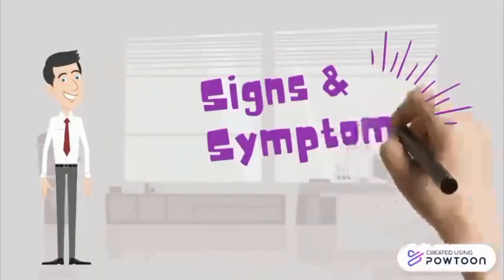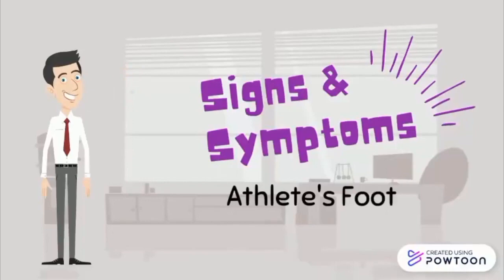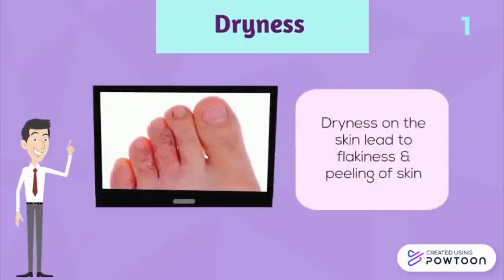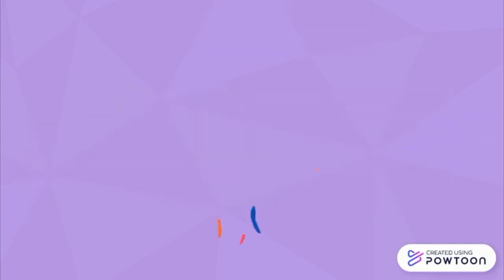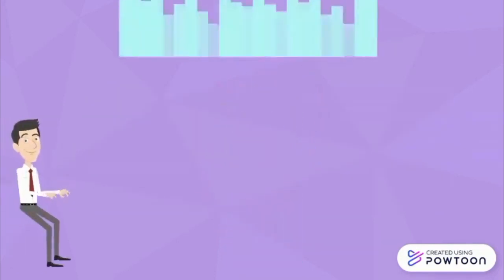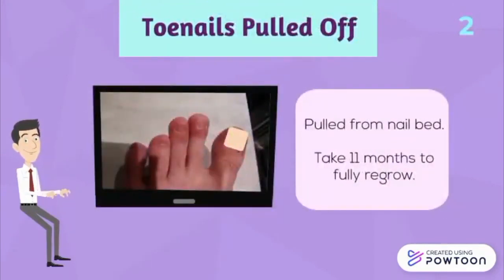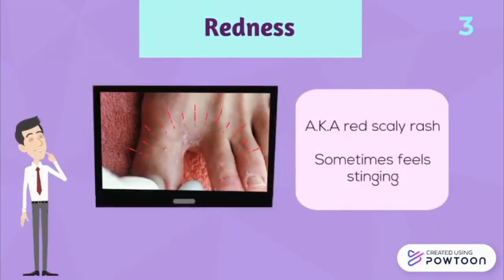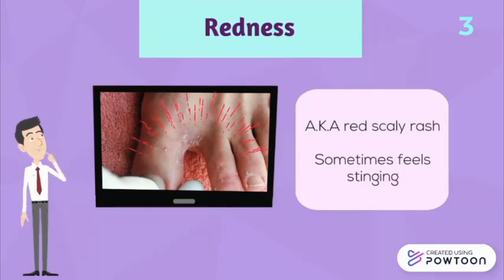Now we move on to the signs and symptoms of athlete's foot. The first is dryness around the toe area. This dryness can often lead to flakiness of the skin with peeling dried skin. The second is where the toenails are pulled off from the nail bed itself. It usually occurs in the big toe rather than the other toes. A new toenail will grow and replace it within 11 months to fully regrow. Third is the sign of redness, also known as a red scaly rash obtained from the infection, which sometimes feels a bit stinging in the affected area.